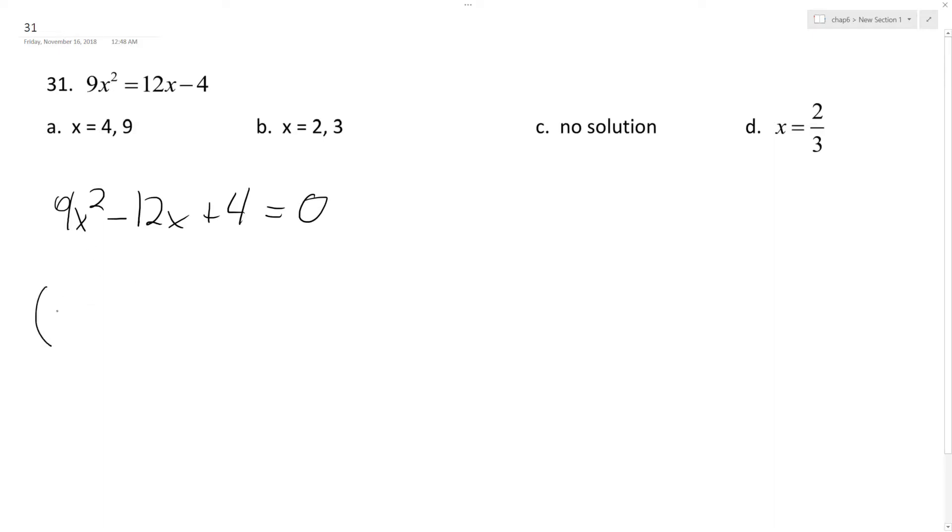I already see this is going to break down to 3x minus 2 and 3x minus 2. So it's going to be a double root because both roots are the same for this.